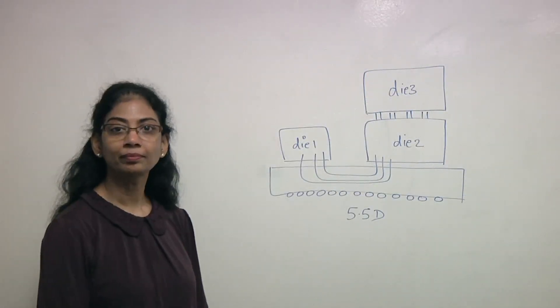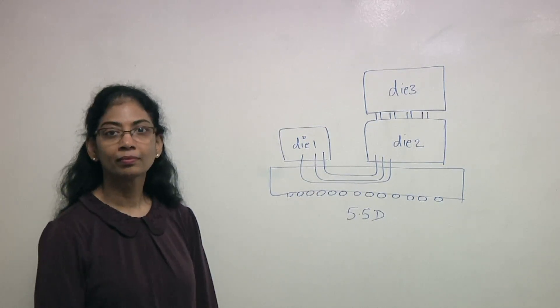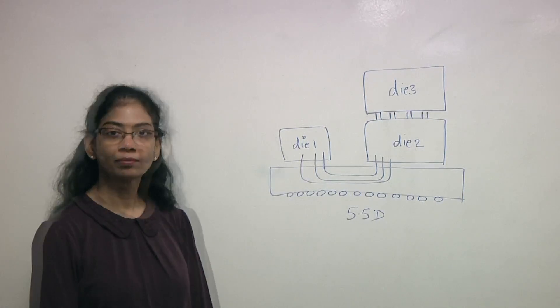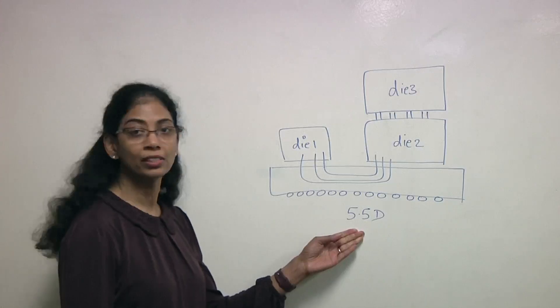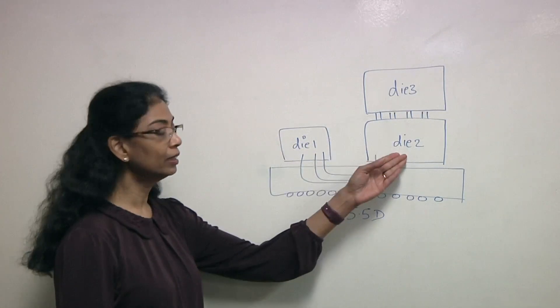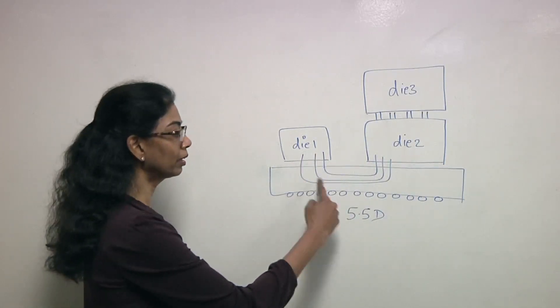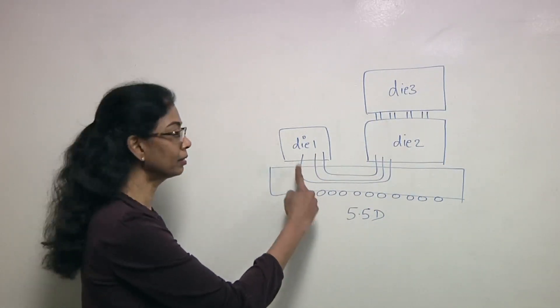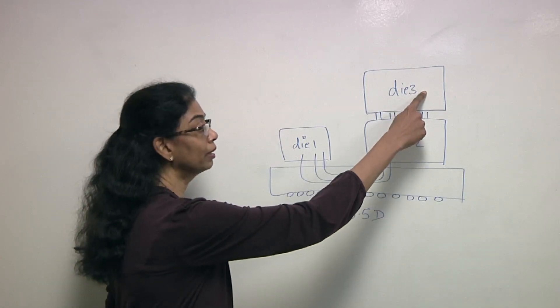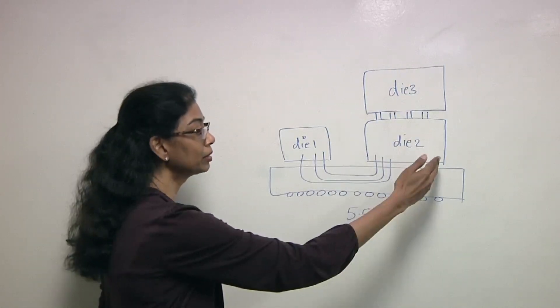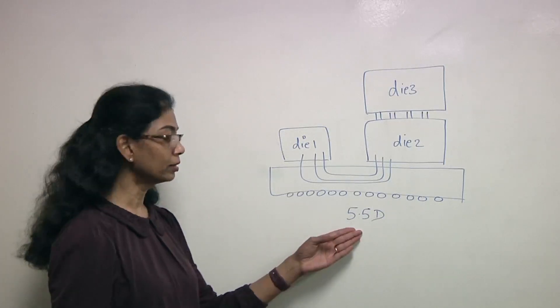There's also a combination of 2.5D and 3D. It's getting much more complicated. People are doing very unique things. What happens here? That's right. IEEE 1838 calls this 5.5D. It's a combination of 2.5D and 3D on the stack. You have die 1 and die 2 connected through the interposer, and that's your 2.5D. And die 2 becomes your base die that's talking to the die stacked on top of it, which is die 3, becomes 3D. But the combination, IEEE 1838 calls it 5.5D.